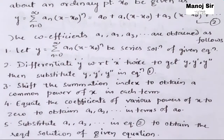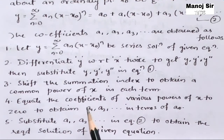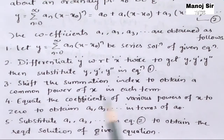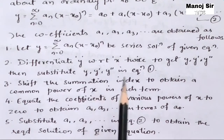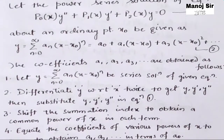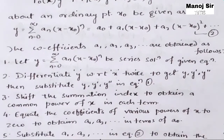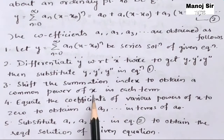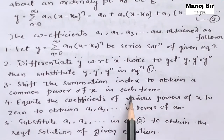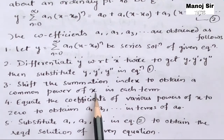Step 3: We will follow all these steps in the next video while solving an important question. After substituting y, y', and y'' into equation (1), you may get different powers of x. In that case, shift the summation index to obtain a common power of x in each term. There may be two, three, or more terms, and in each term we need to make the power of x common.